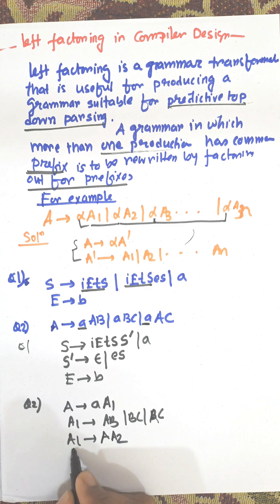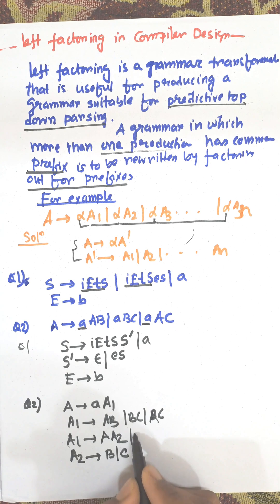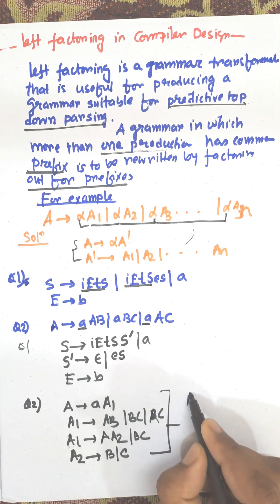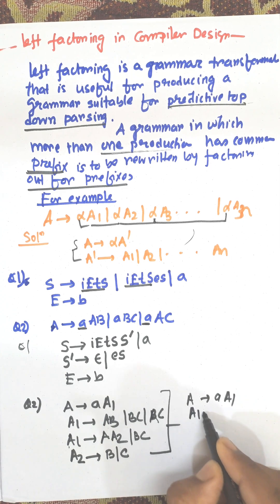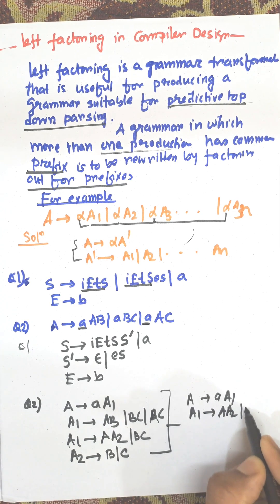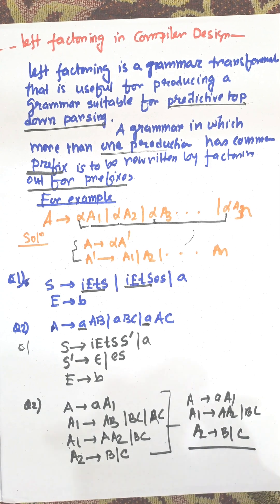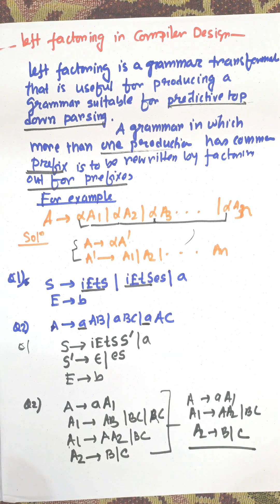From A, A1 produces A and A2. And from A2, that equals: A2 produces B or C. A1 to BC will remain the same. So the final production answer is: A produces A A1, A1 produces A A2 and BC, and A2 produces B or C. So this is the left factoring production. Thank you very much for watching this video.